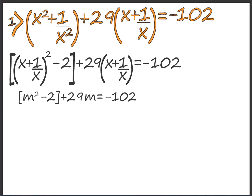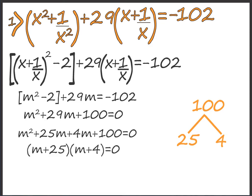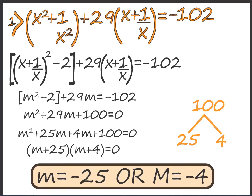We substitute x plus 1 by x as m. We thus get m squared minus 2 plus 29m equals 102, which simplifies to m squared plus 29m plus 100 equals 0. Using splitting the middle term: m squared plus 25m plus 4m plus 100 equals 0, giving m plus 25 into m plus 4 equals 0. Therefore m equals negative 25 or m equals negative 4.